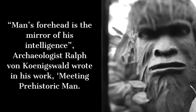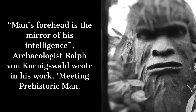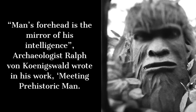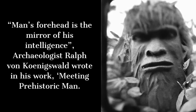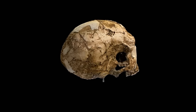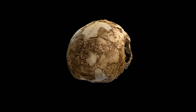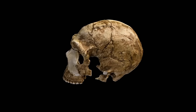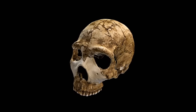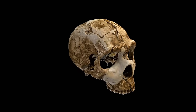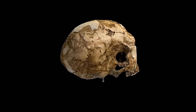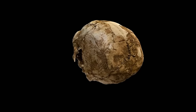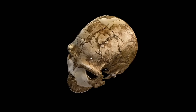"Man's forehead is the mirror of his intelligence," archaeologist Ralph von Koenigswald wrote in his work "Meeting Prehistoric Man." Human fossils are sometimes referred to as Neanderthaloid when they have large Neanderthal-like features such as large brow ridges, large eye sockets, and low-vaulted, elongated brain cases. One hypothesis around the supraorbital torus, or brow ridge, is a signaling effect accentuating aggressive stares, thus its large size could have been sexually selected through generations.